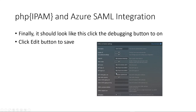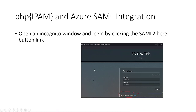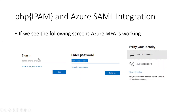After we've done all that, it should look very similar to this. Note that I've turned debugging on. If we open an incognito window and go to the login page, you should see the following screens. If MFA is working: sign in, enter your password, and select one of your MFA methods. This MFA needs to already be set up for the user beforehand — if you haven't done that, it's not going to work.